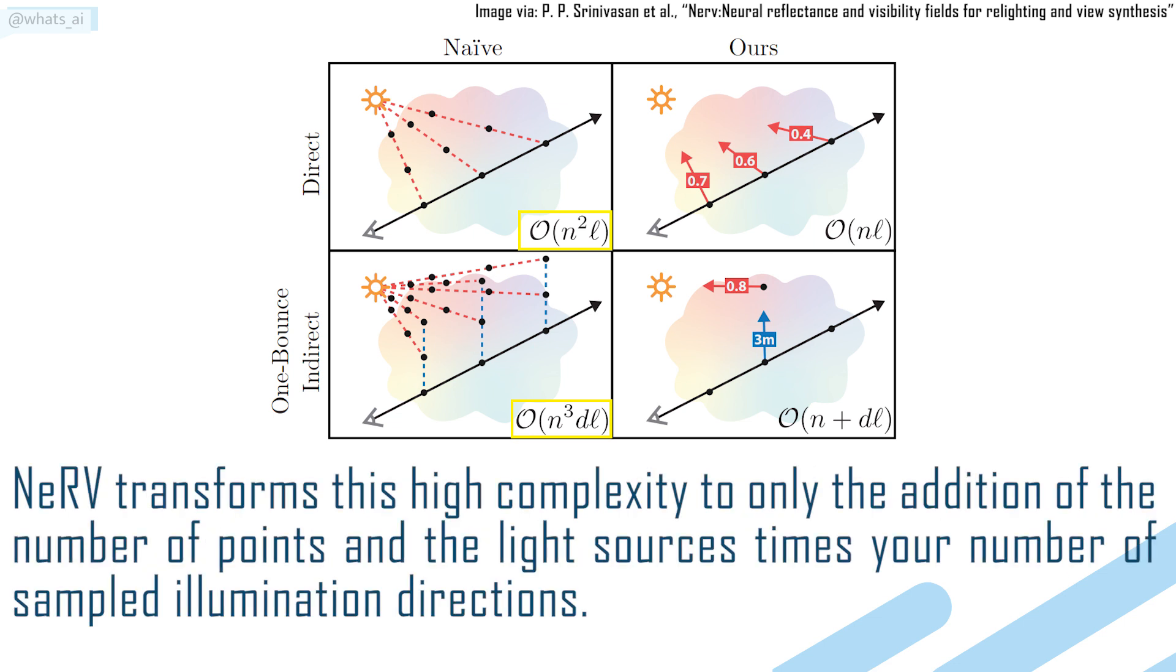NeRV transforms this high complexity to only the addition of the number of points and the light sources times your number of sampled illumination directions.